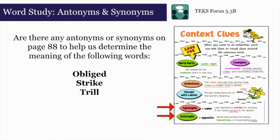Alright scholars, let's look at the following words from page 87 of The Secret Garden: obliged, strike, and trill. What I want for you to do now is look through the selection to find each unfamiliar word, then look for synonyms or antonyms in the surrounding sentences to determine the word's meanings. What synonyms for these words could the author have used? After you finish, I want you to write your own sentences that use synonyms or antonyms to give hints about each word's meaning in your notebook.